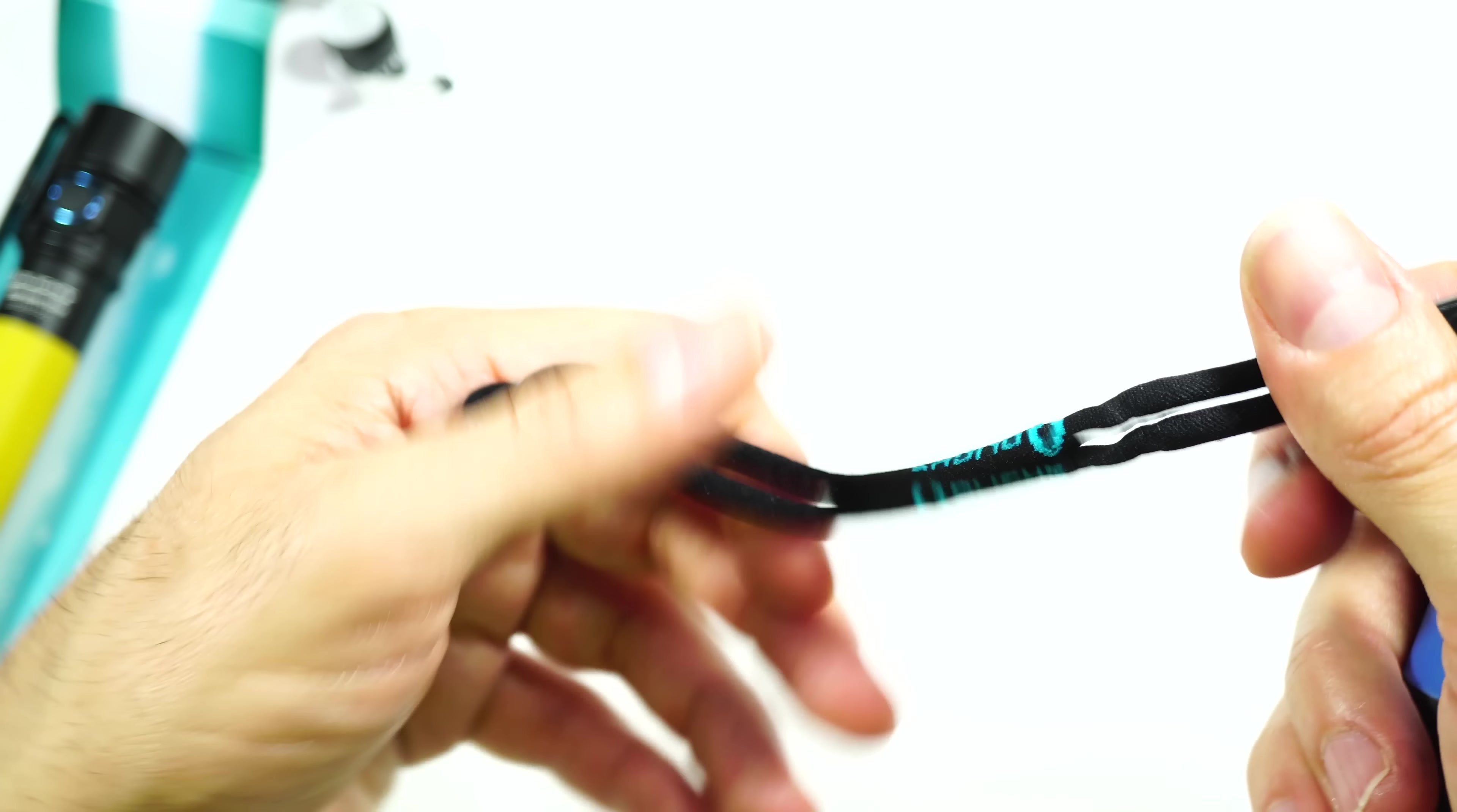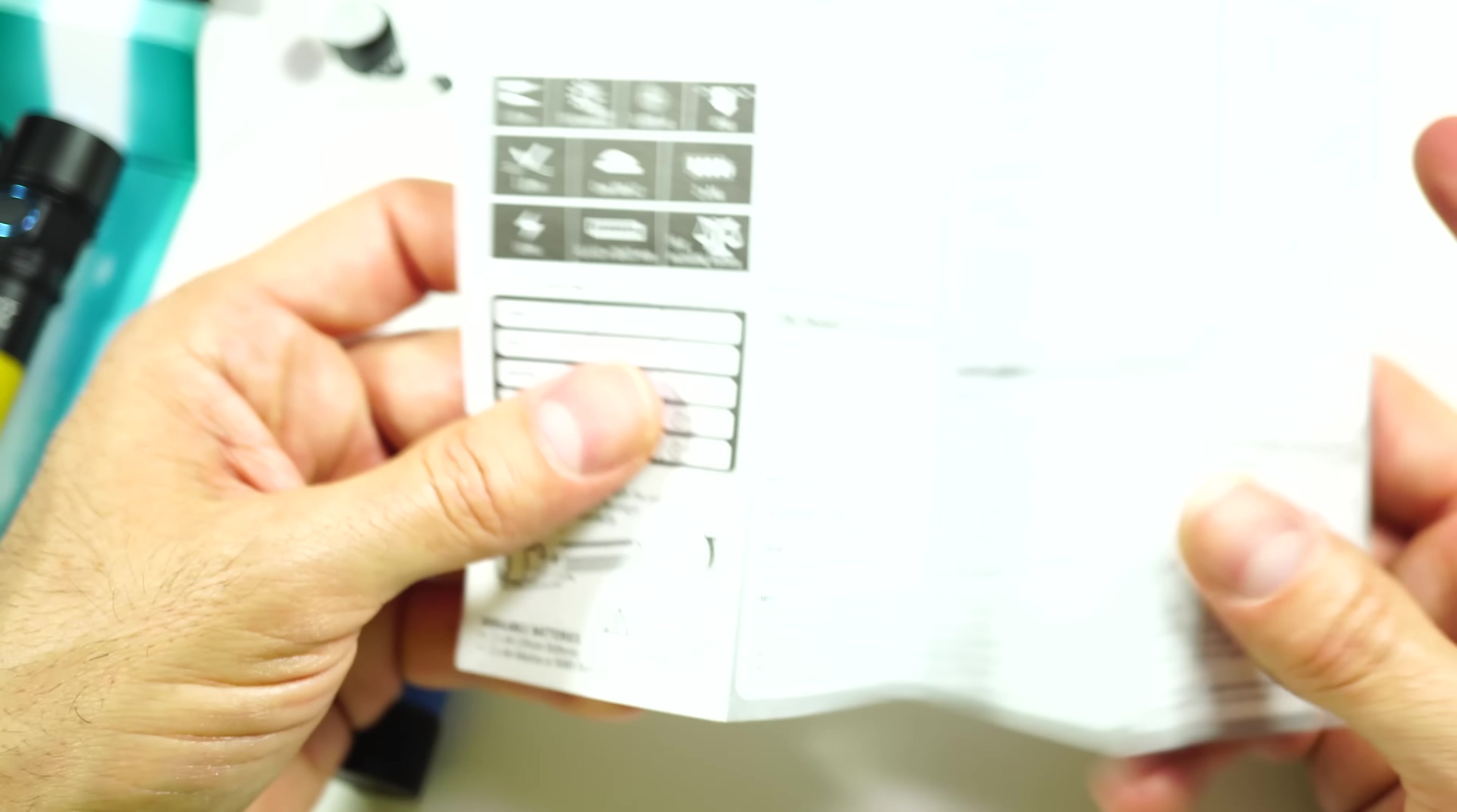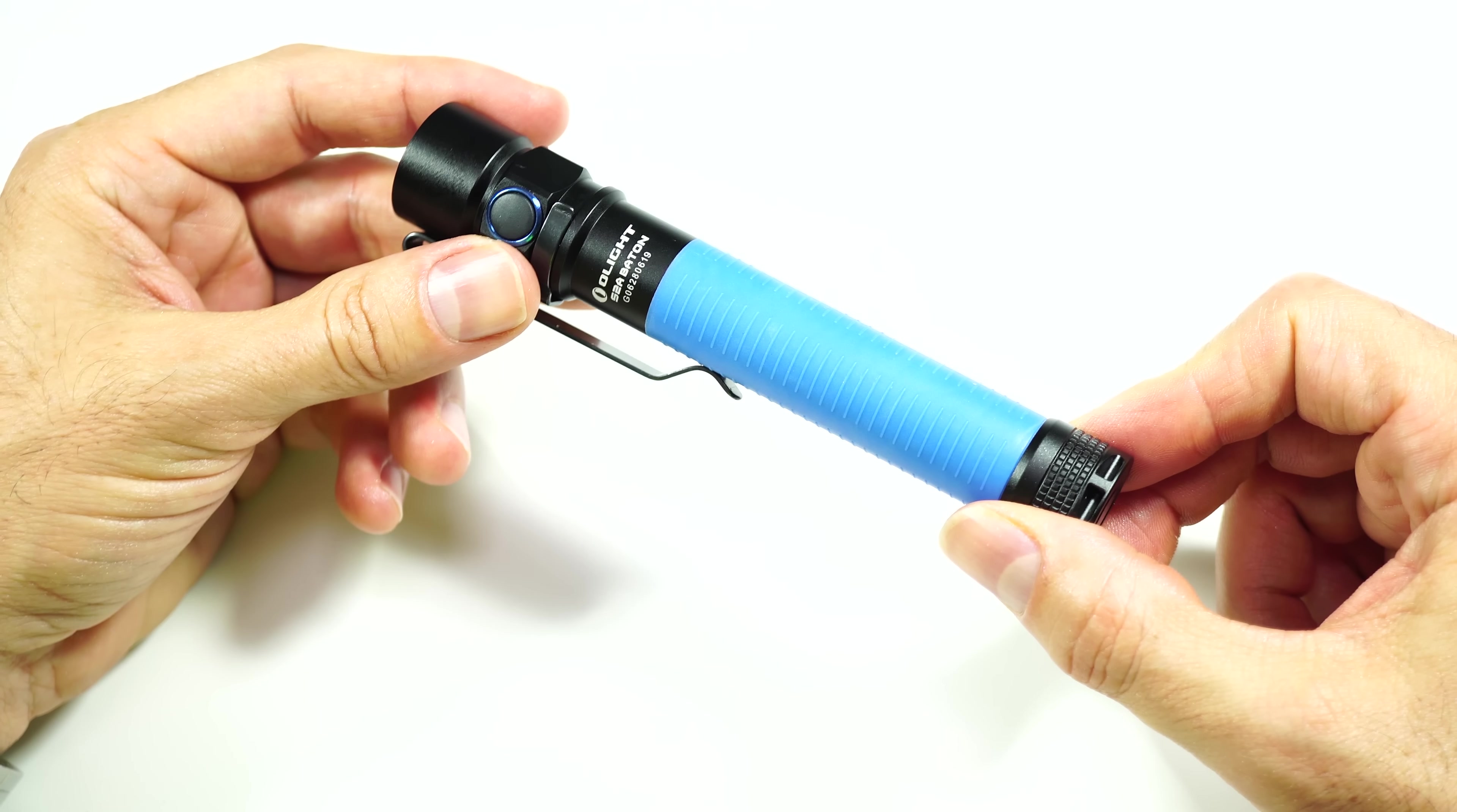The lanyard here has the Olight logo on there, and then you can cinch this down for as tight or loose as you want to make it. Aside from that, there is also the instruction manual. Comes in a couple different languages, warranty stuff on the back, but a little instructional pamphlet has all the specs on it. And so that is what the light comes with.